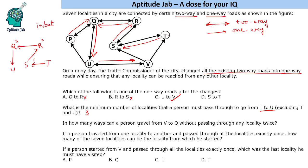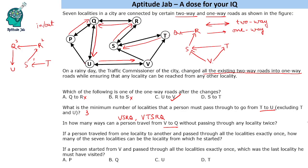In how many ways can a person travel from V to Q without passing through any locality twice? V is here, then we have T and S, with a T to S connection, then S to R and R to Q. Either we can go directly V, S, R, Q or we can take the route V, T, S, R, Q. We cannot go from V to U on this side. So there are only two such ways.